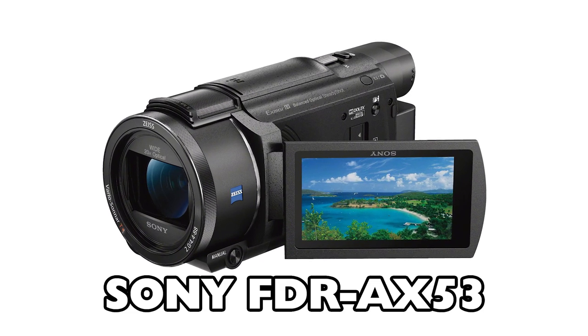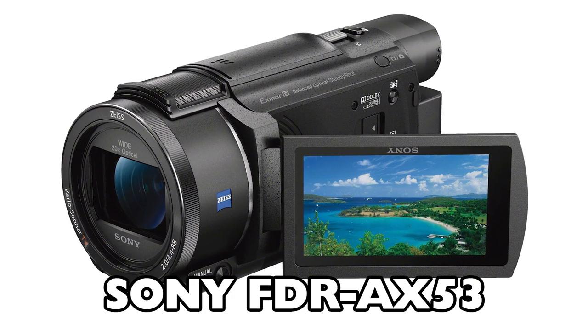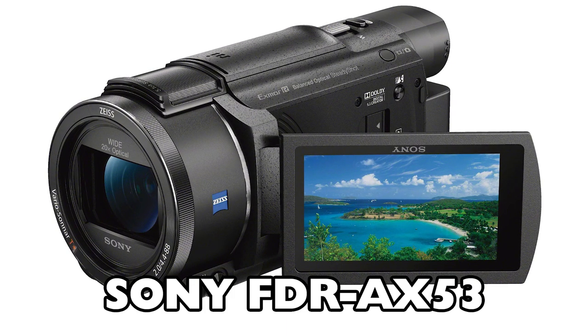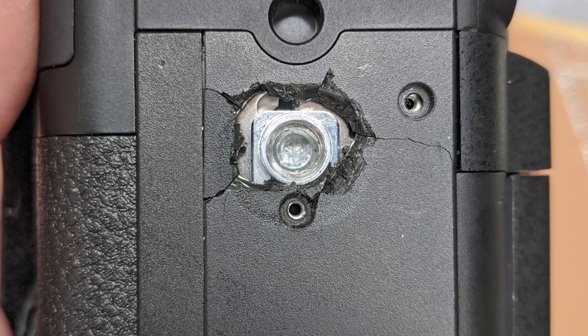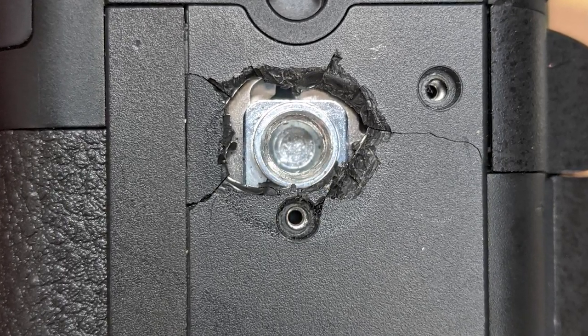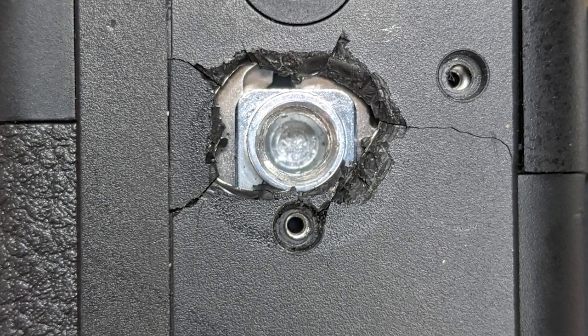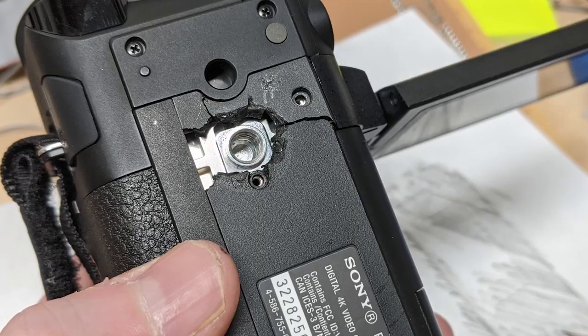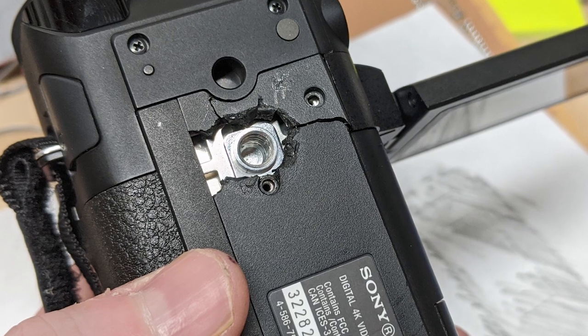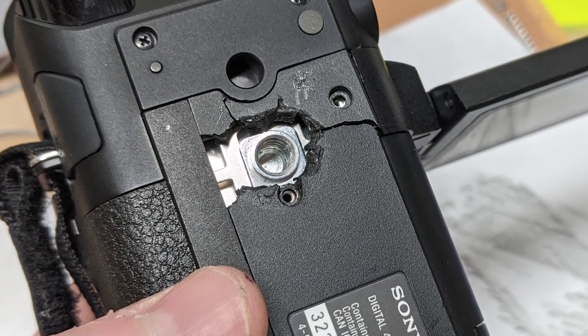I use the Sony FDR-AX53 4K Handycam for making my YouTube videos. It's a good camera, but it has this flaw around the bottom. The plastic around the tripod area cracked, and it seems like every time I unmount or mount it, I lose more plastic. So I'm going to rip this all apart and try to replace it with a 3D printed part.